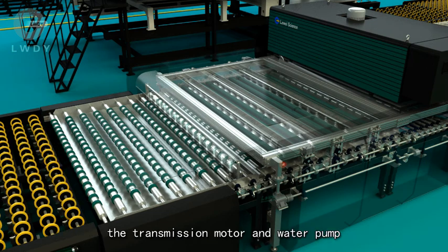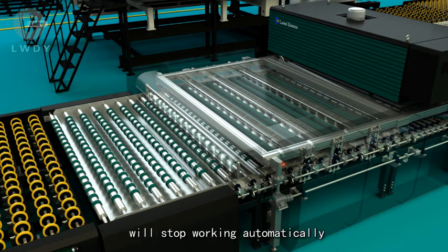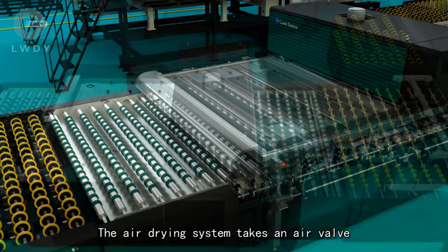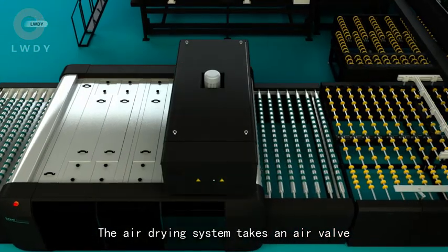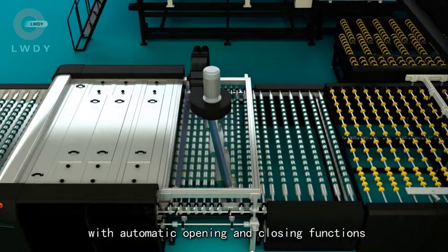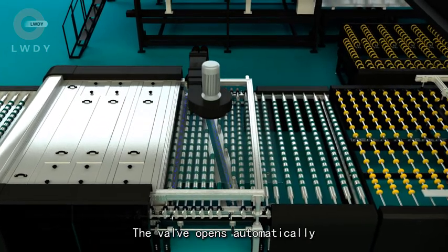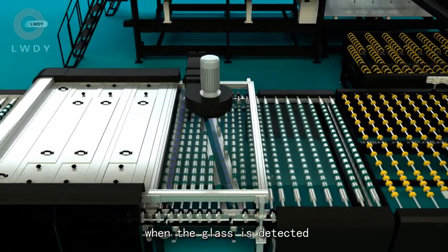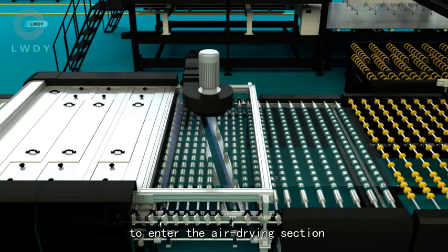The air drying system takes an air valve with automatic opening and closing functions. The valve opens automatically when the glass is detected to enter the air drying section.